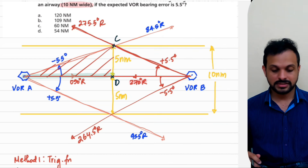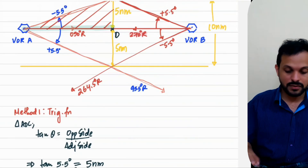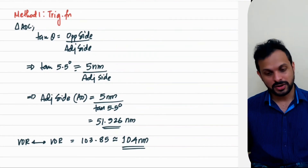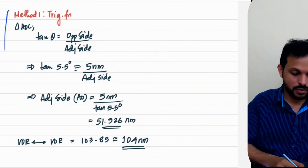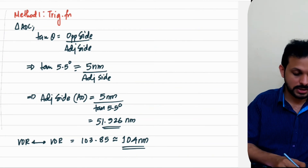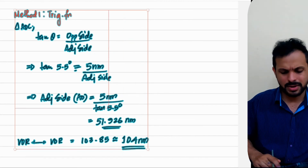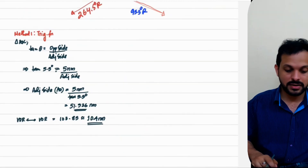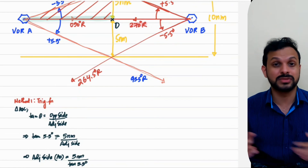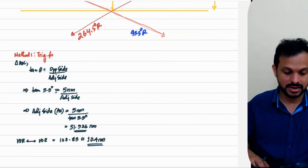Getting back to the original figure: the distance between VOR A and VOR B using the trigonometric function is 104 nautical miles. Now let's find the same using the 1-in-60 rule. We have a right-angle triangle, and the track angle of 5.5 degrees is well less than the 20-degree limit for 1-in-60, so we can apply it.